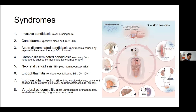Another syndrome is chronic disseminated candidiasis, which occurs when people recover from neutropenia caused by chemotherapy. On recovery, they develop a low-grade fever, right upper quadrant pain often associated with a tender liver, splenomegaly, and increased ALP levels. Imaging studies reveal multiple focal abnormalities in the liver, spleen, kidneys, and sometimes the lungs. These lesions develop following neutrophil recovery, suggesting you need an adequate host immune system to see them radiologically. Sometimes you get a positive blood culture, but sometimes a liver biopsy is needed.